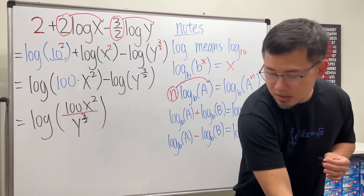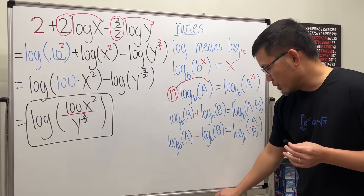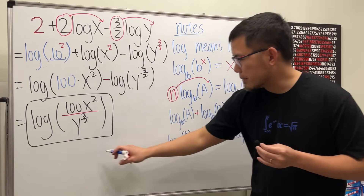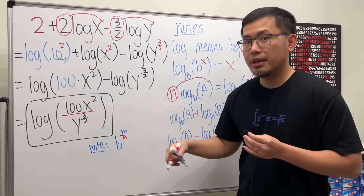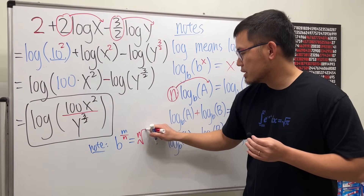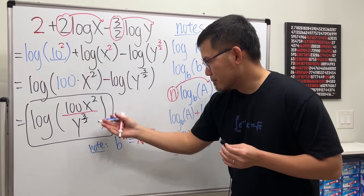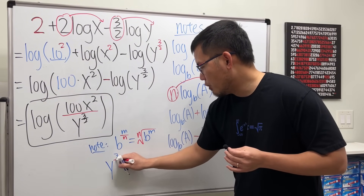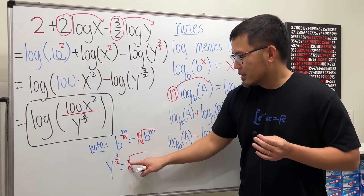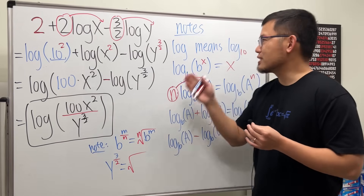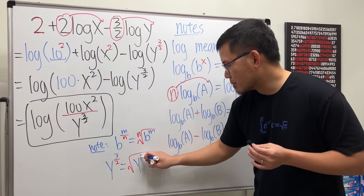Sometimes you may have to write the answer in radical form. If you have b raised to the m over n power, it becomes the nth root of b to the m. So y to the 3 over 2 can be written as the square root of y cubed — the 2 in the denominator becomes the square root, and you don't need to write the 2, just like how log without a base means log base 10. The inside is y to the 3rd.